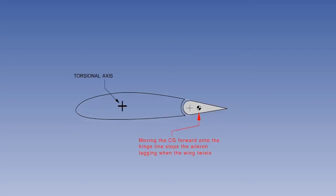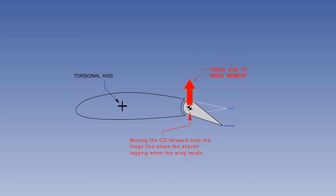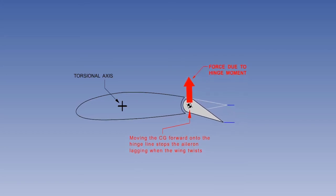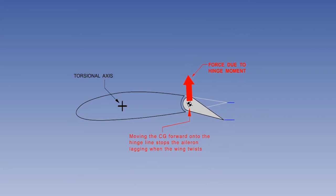To prevent flutter, the CG of the control surface is moved forward onto the hinge. You can see that the force on the hinge line still twists the aerofoil, but there is no increased control surface deflection.